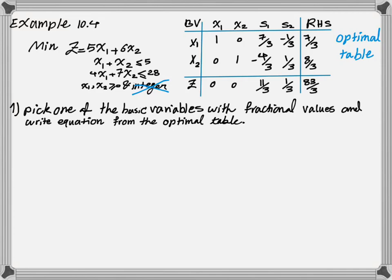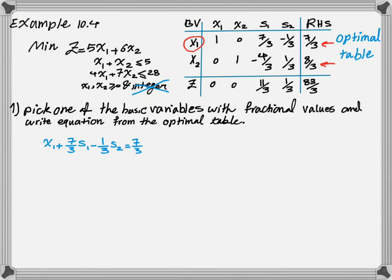If you look at the optimal table, you have two variables that have fractional values — both x1 and x2 have fractional values. Let's choose one arbitrarily. It doesn't matter which one you choose, but the number of iterations to reach the final integer solution may vary depending on your choice. So let's choose the first variable and write the equation for that row. The equation related to the first row of the optimal table will be: x1 plus 7/3 s1 plus negative 1/3 s2 equals 7/3.